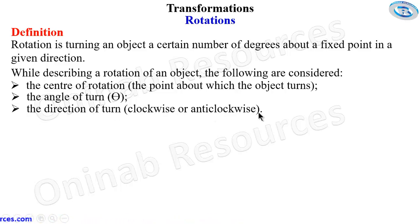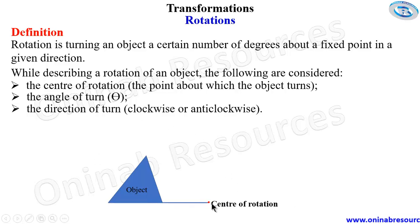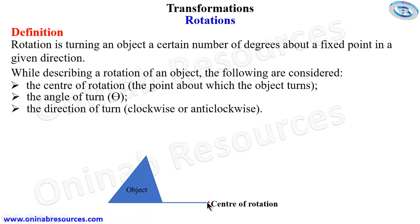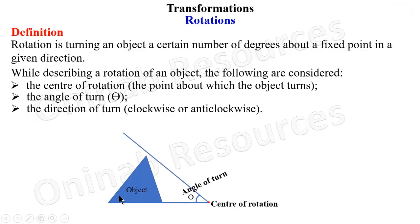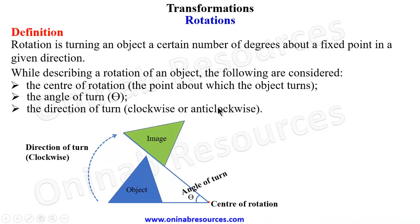Is it clockwise or anti-clockwise? We quickly demonstrate rotation using this object, which is a triangle. First we need the center of rotation — we choose this point as the center of rotation. Then the angle of turn — make sure you have a line from the center of rotation to the diagram to get the angle of turn. Then the direction, which is clockwise, so the object moves to form the image after rotation.